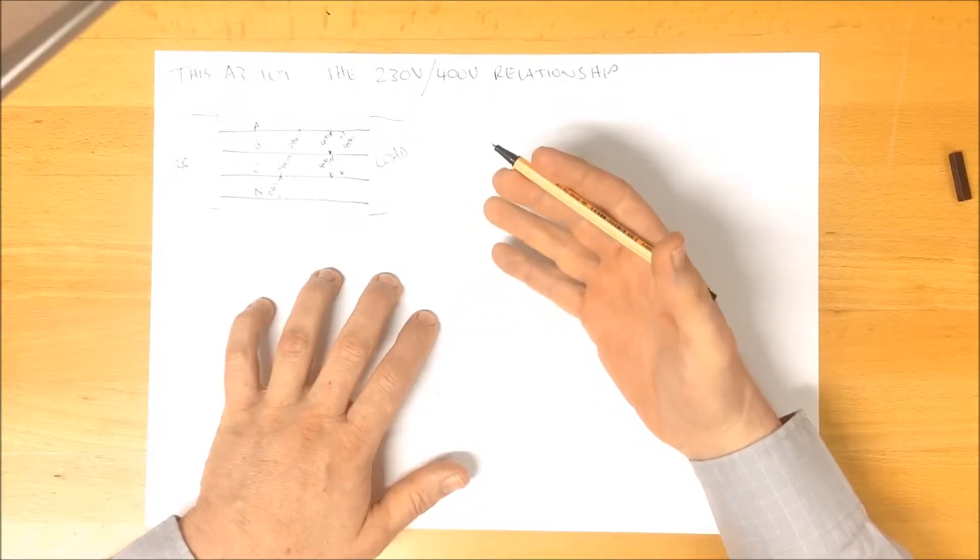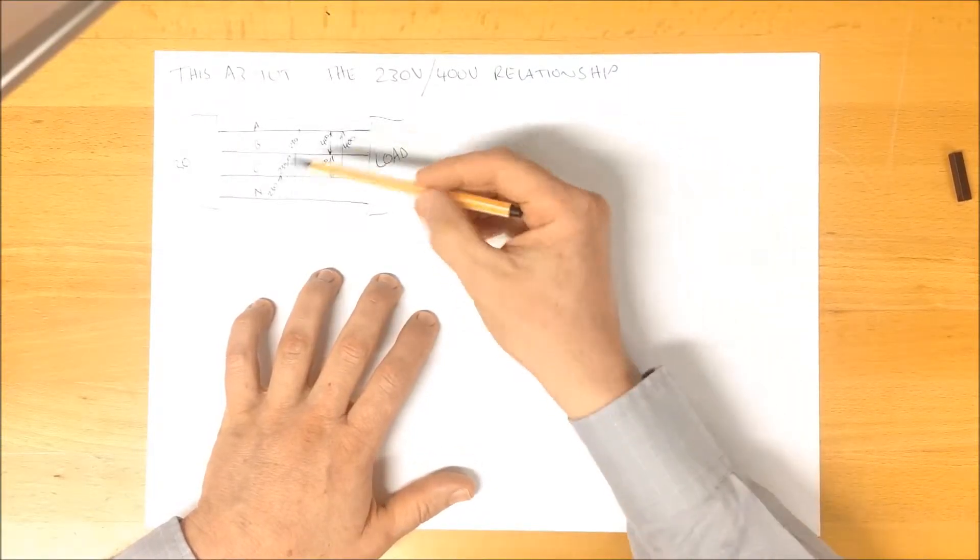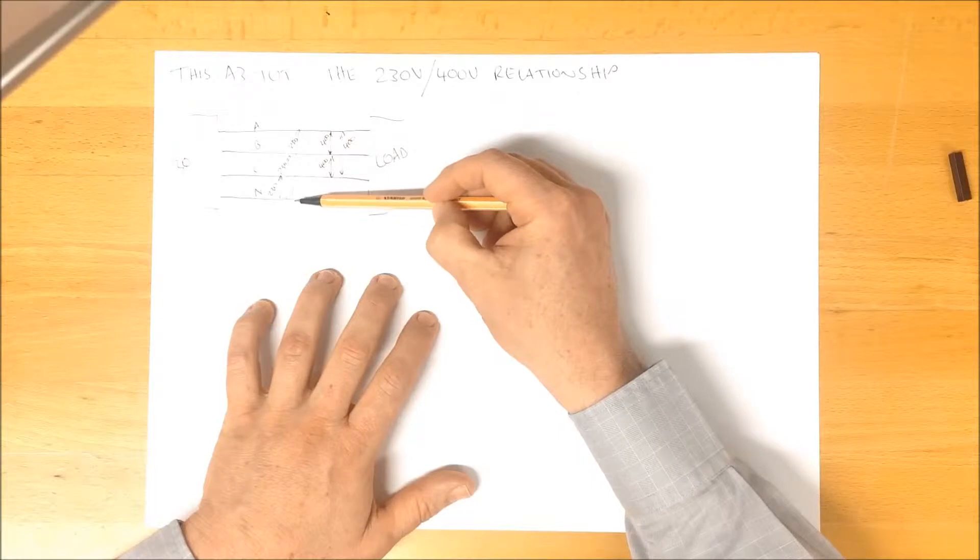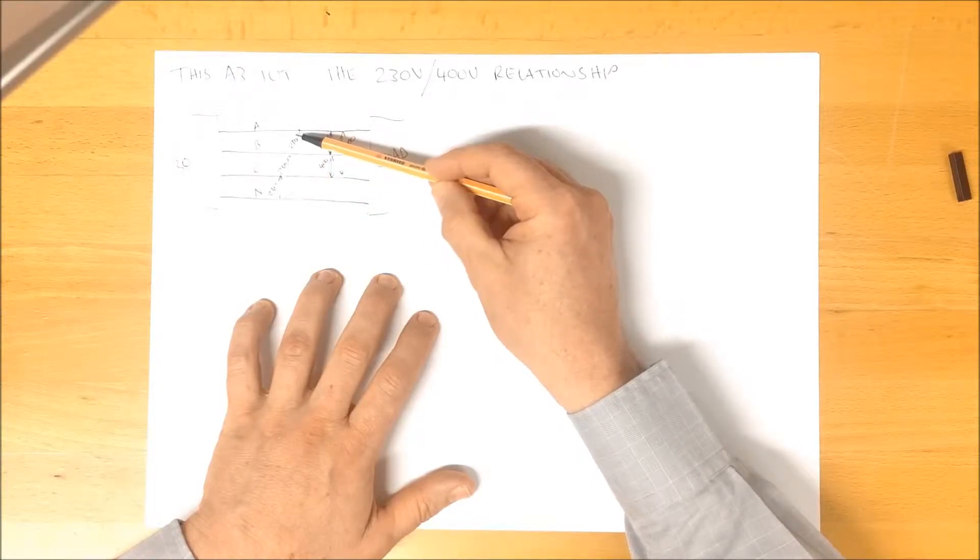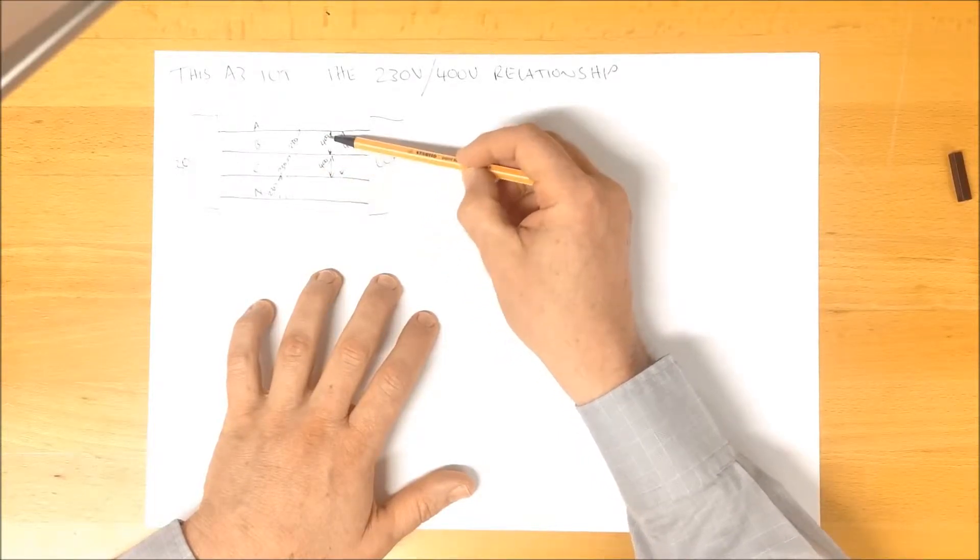That does not appear to make much sense. How can you have a difference between all of these of 230 relative to this point and a difference of 400 relative to these?